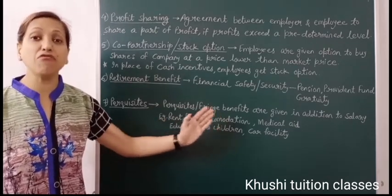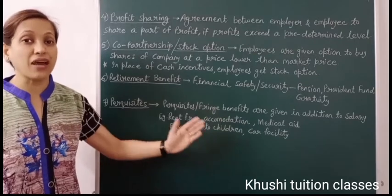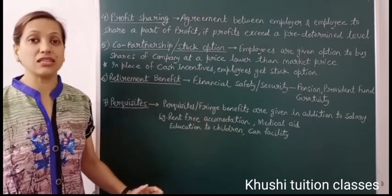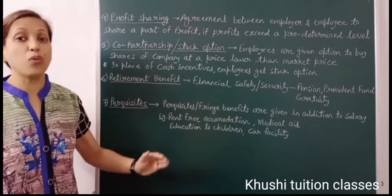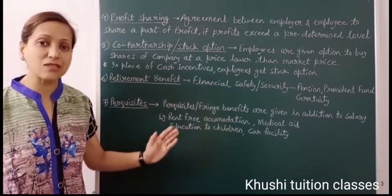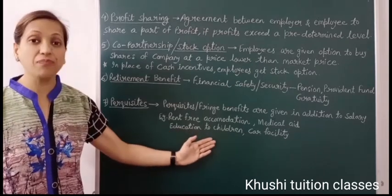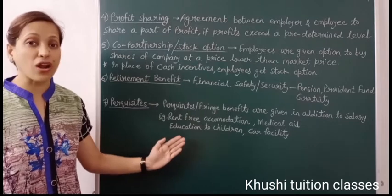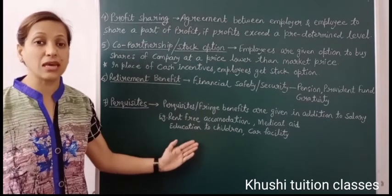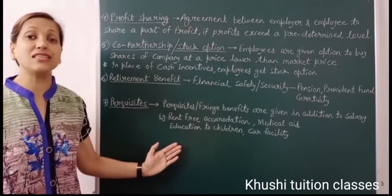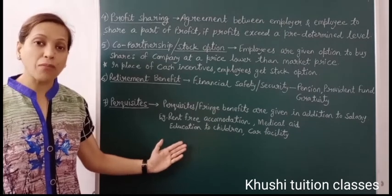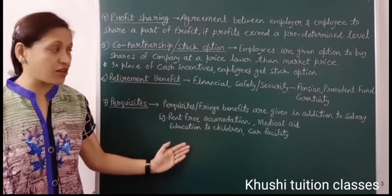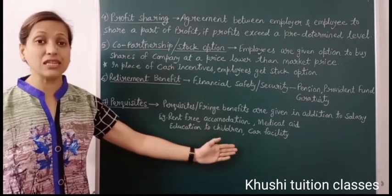Another perquisite is medical aid, i.e., medical facilities — employees can get treatment in the company's hospital, or the company pays employees' medical expenses. Education for children is also a perquisite — the organization has its own school or college where employees' children can study, such as Kendriya Vidyalayas where government employees' children study.